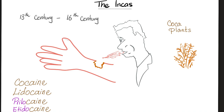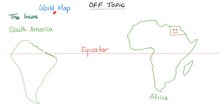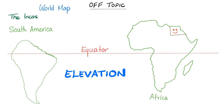Let me go off topic for a second. If you look at the world map, the equator passes through Africa and South America — both warm regions. The Anopheles mosquito loves warm temperatures. But why did malaria devastate Africa while there's no mention of malaria in the Inca civilization? The answer is one word: elevation. This area of South America has lots of mountains. As you go up, it gets colder and is not suitable for the Anopheles mosquito — hence, less risk of malaria.